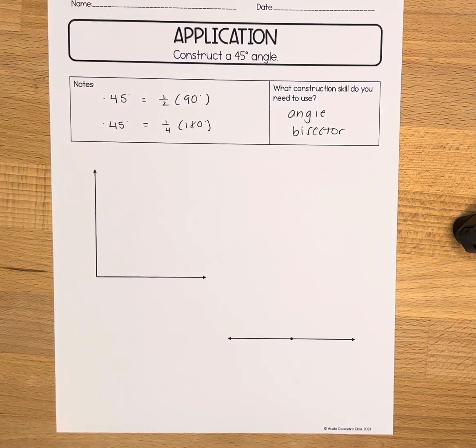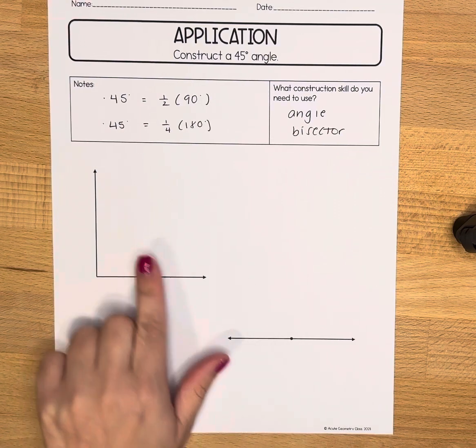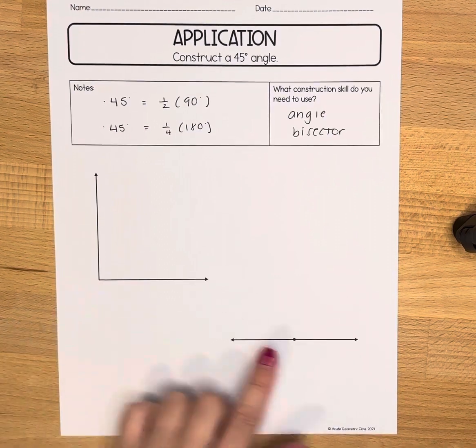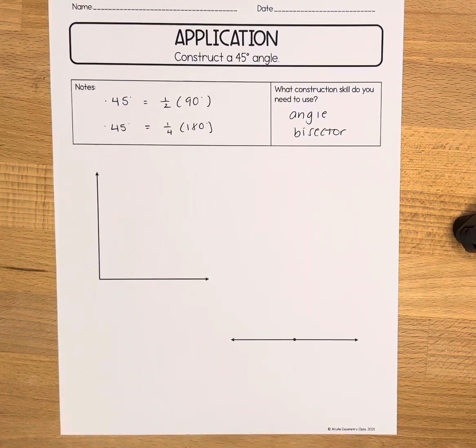In this video we're going to be constructing a 45-degree angle. We are going to do two different examples: one where we are given a right angle to start and one where we're given a straight angle to start.